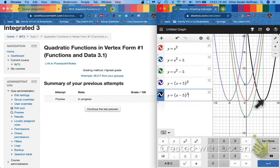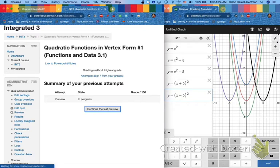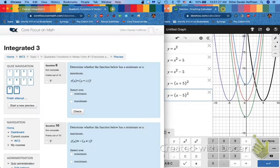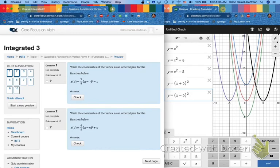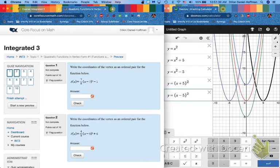All of these are review for what we're going to do today so hit attempt quiz now, dive right into it. We're going to take this knowledge and we're going to answer some questions. Number one says write the coordinates of the vertex as an ordered pair for the function below.